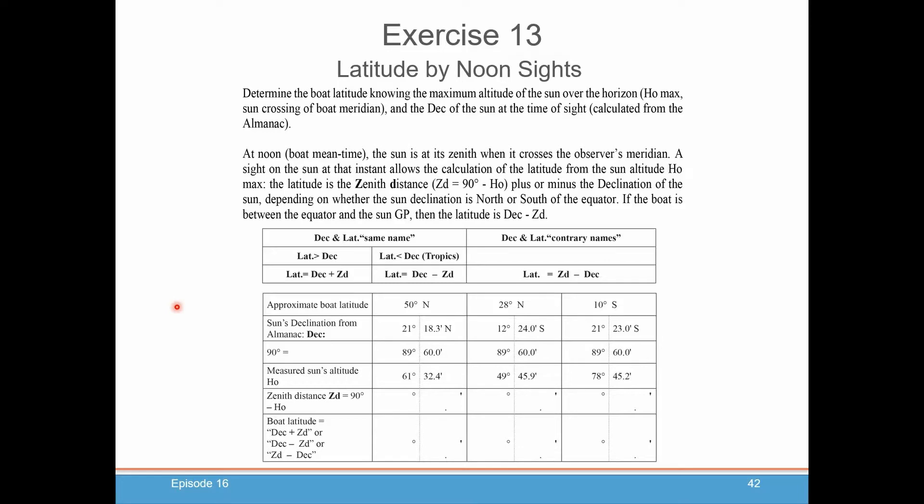Here's an exercise where you can try that out. Basically, here are your rules that we just went over, whether the declination and latitude are the same name, and whether the latitude is greater than the declination or your latitude is less than the declination. Usually this will be the case if you're in the tropics, or your declination and latitude are contrary names, so north and south, south and north. And here are some examples that you can try on your own, and if you get the exercise manual you'll get the answers to check yourself.